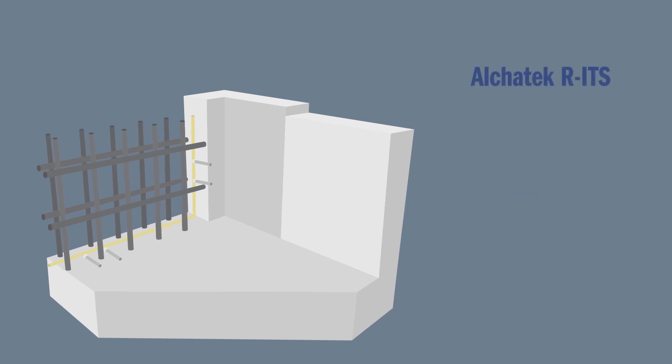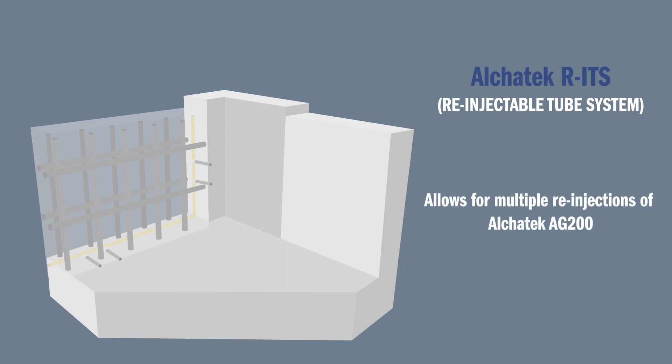Alchatek's RITS or re-injectable tube system functions in a similar way, except that it allows for multiple re-injections of Alchatek AG200 should the structure shift and a leak reappear.